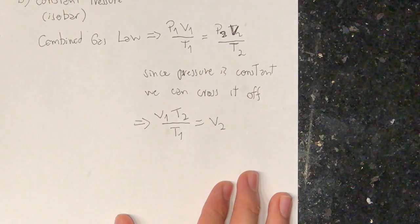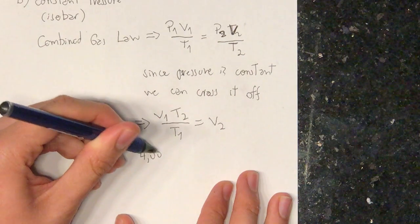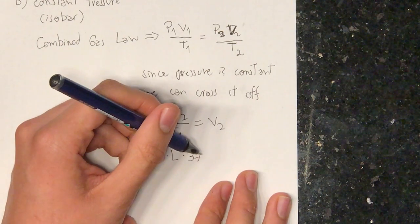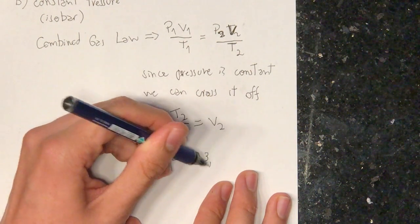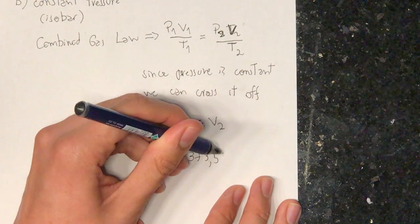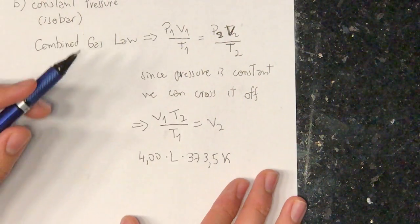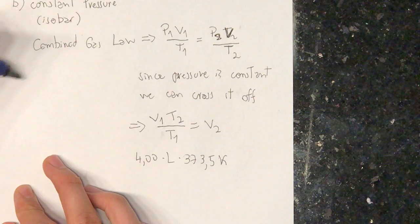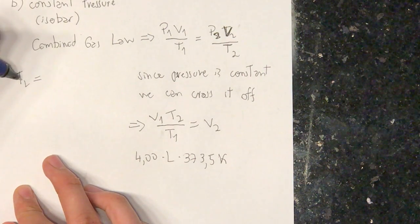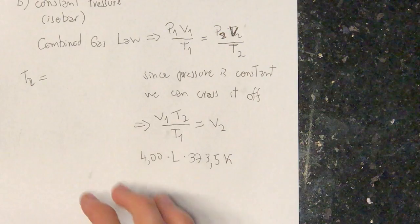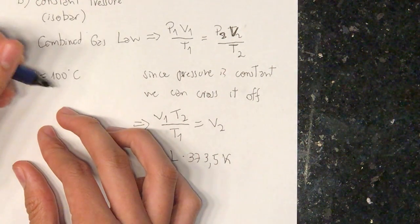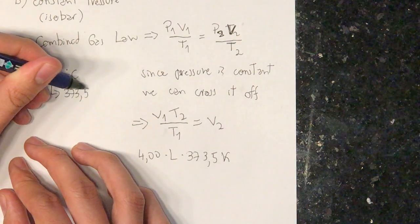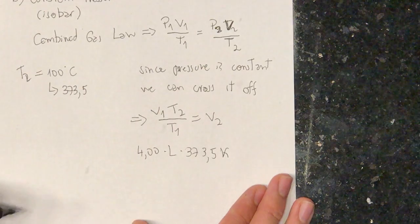When we replace the values, we have 4.00 liters times 373.5 Kelvin, which is, sorry, I've been converted before. But we have that the temperature 2 is equal to 100 degrees Celsius. And when we convert that to Kelvin, we obtain 373.5 Kelvin.